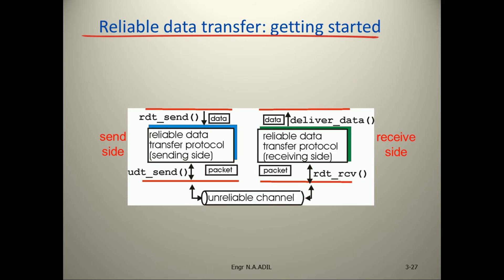Getting started: RDT send data on the sending side, the reliable data transfer protocol sending side uses UDT make packet and then sends it to the transport layer for sending to the destination through the unreliable channel.